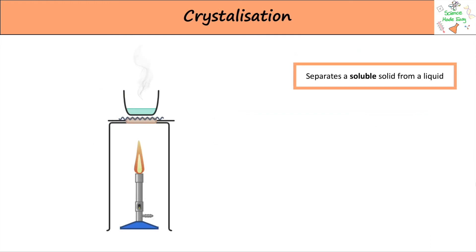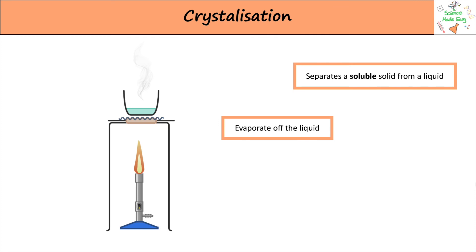Crystallization separates a soluble solid from a liquid — a solid that is dissolved. A Bunsen burner is used to heat the solution until the liquid begins to evaporate. The solid can't evaporate as it has a much higher boiling point, so it is left behind as crystals to be collected.